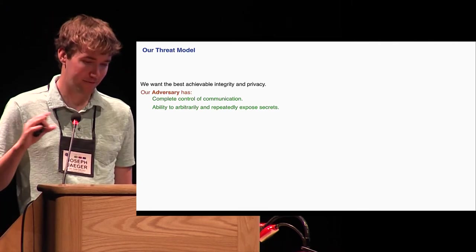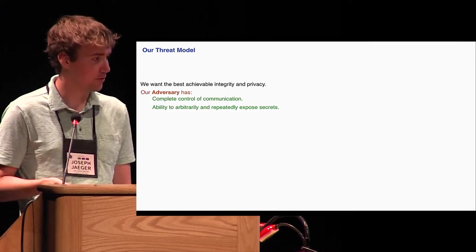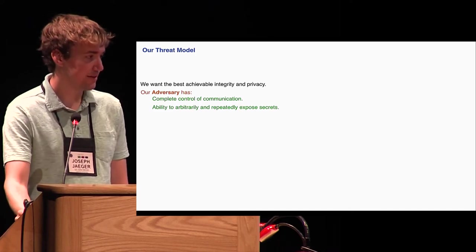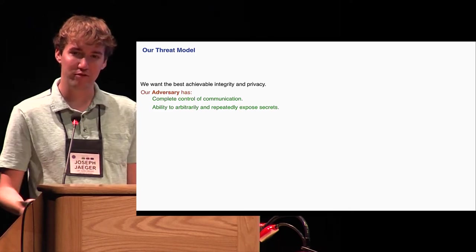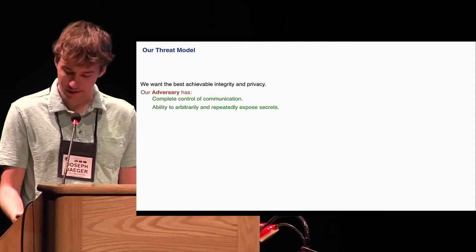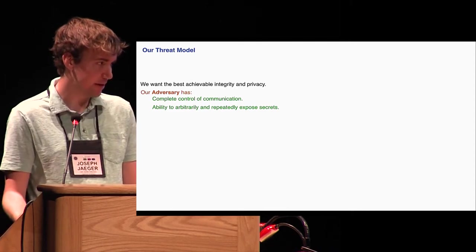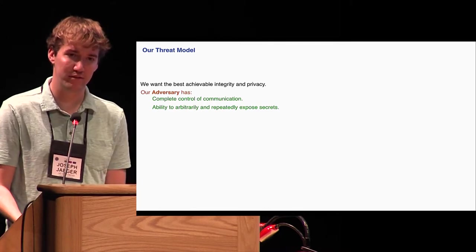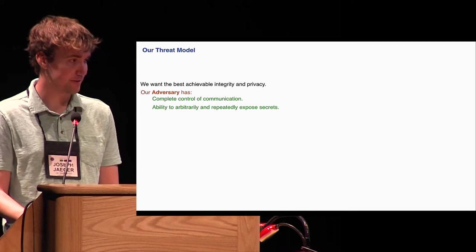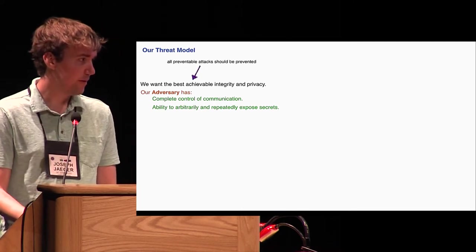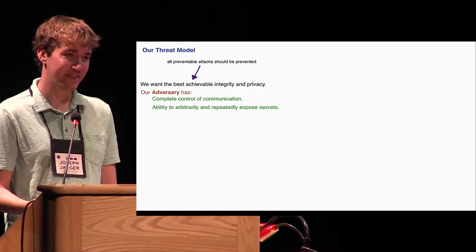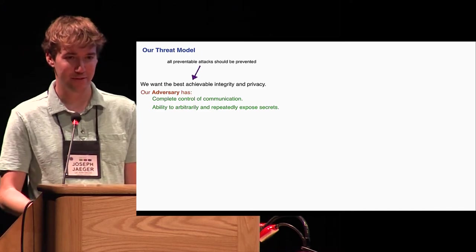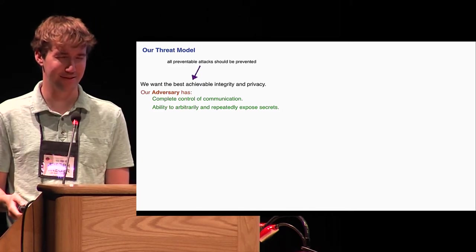So at a very broad level, the threat model we've tried to formalize is looking for both integrity and privacy in the face of an adversary which has complete control of the communication sent between the two parties and is able at any time, and perhaps repeatedly, to steal the secret state stored by one or both parties. By best achievable, how I want us to think of that is that any attack which could be prevented is prevented. We, of course, can't hope to prevent the attacks which are unpreventable.